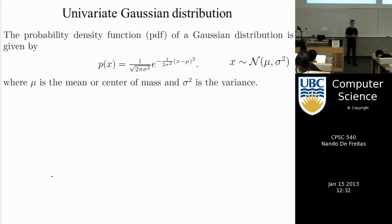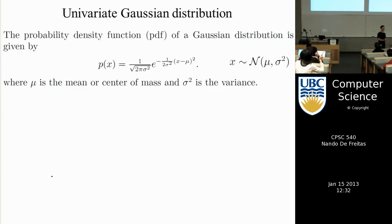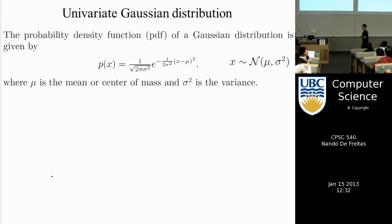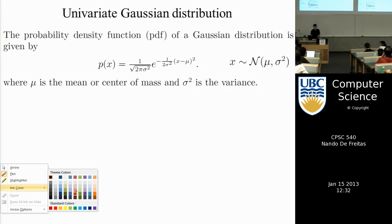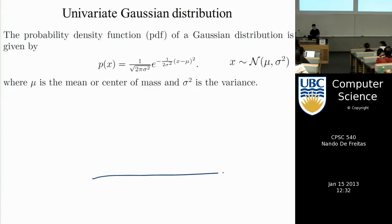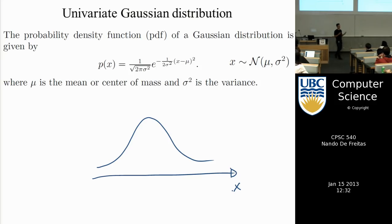Univariate Gaussian distribution — how many of you have seen this expression before? It's a way of measuring the uncertainty for a variable that is continuous, defined on the real line between minus infinity to infinity. The multivariate distribution — we've probably all seen it — is this bell curve, defined over the domain of a random variable x. A random variable is just a variable that measures some quantity that is uncertain.